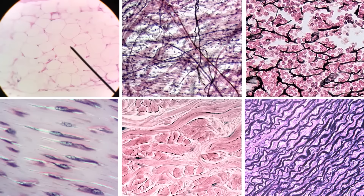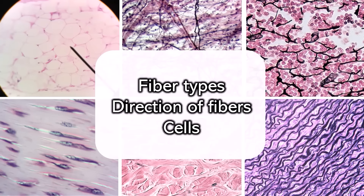So when you're looking at connective tissue, you want to think: what fiber types am I seeing? What directions are those fibers going in? And it can also be helpful to look at the type of cells and the quantity of cells you're seeing.